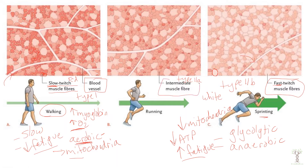Intermediate fibers have characteristics of both. They have an intermediate diameter — bigger than the darker slow twitch fibers and smaller than the larger fast twitch fibers. They can use both oxidative phosphorylation and the glycolytic pathway, being partly aerobic and partly anaerobic. They can exert more force than slow twitch fibers but not quite as much as fast twitch fibers. They have an intermediate amount of myoglobin — not as dark as slow twitch fibers but darker than the white fibers — and a moderate amount of blood flow.